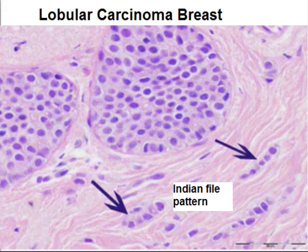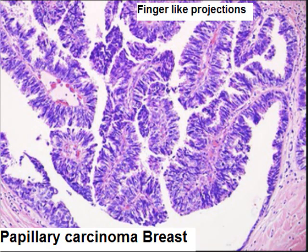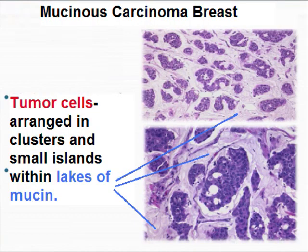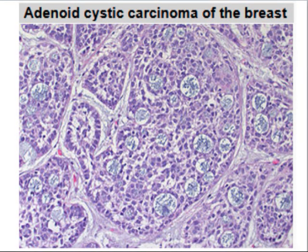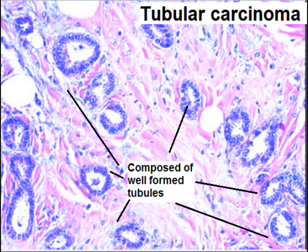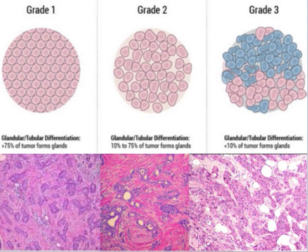The last variety is basal-like triple negative, which has association with BRCA1 and P53 mutation. There are certain morphological types which carry good prognosis, like lobular carcinoma of the breast, papillary carcinoma of the breast, and mucinous carcinoma of the breast — where tumor cells are in the shape of clusters and small islands within lakes of mucin — as well as adenoid cystic carcinoma of the breast.